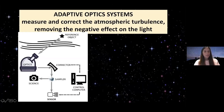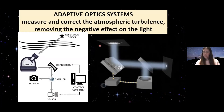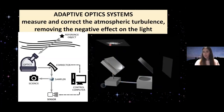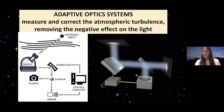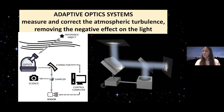So we have our deformable mirror. The light coming from the object through the atmosphere will be blurred, but then we measure it with the wavefront sensor, send information to the deformable mirror, and this will change its shape and produce a much nicer image on our science detector.